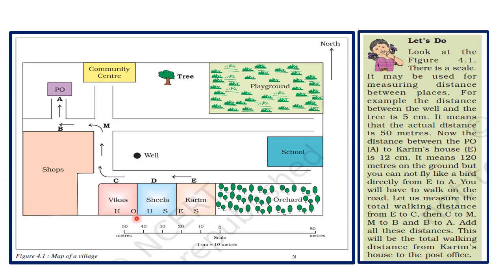See this figure — it is a map of a village and many features are shown in it. It is drawn on a large scale because small areas are described on large scale maps. The scale here is 1 centimeter represents 10 meters, so 5 centimeters represents 50 meters. On this map you can see a playground, trees, a community center, a post office, a branch shop, and the houses of Vikas, Sheila, and Karim. There is also an orchard, a school, a well, and a road.